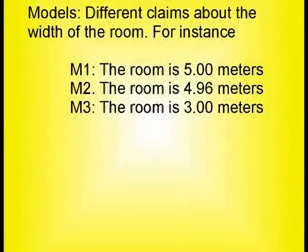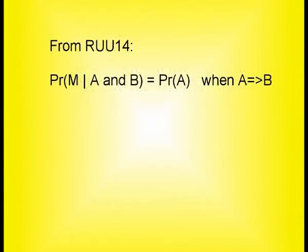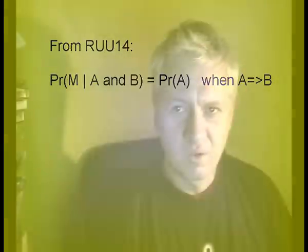So you can update your probabilities for the models — in this case the different possible widths of your room — with your newfound data, the measurements of the width of the room. As could be seen in the last clip, if you add information that totally depends on what you already know, this will not update your model probabilities at all. Conversely, if you add relevant information that you cannot accurately predict in advance, this means that you've gained new insight into the models.